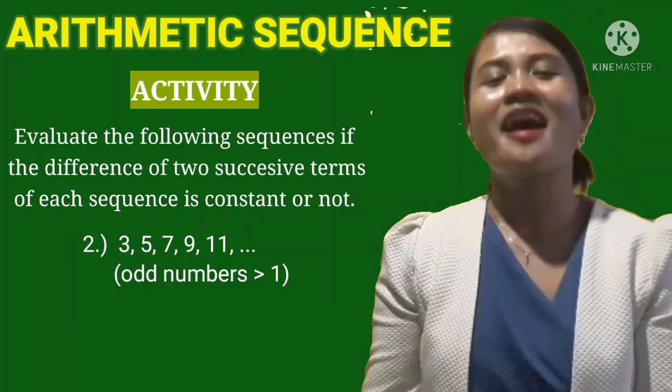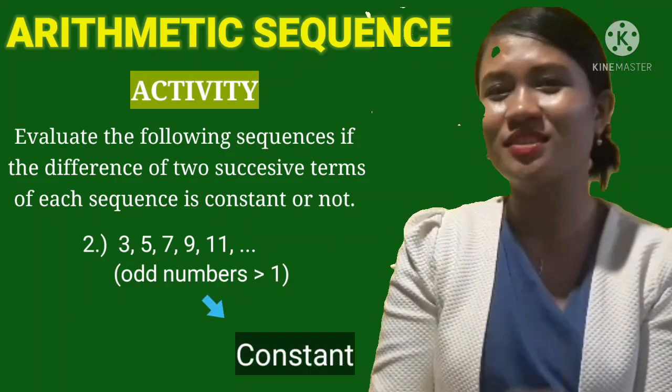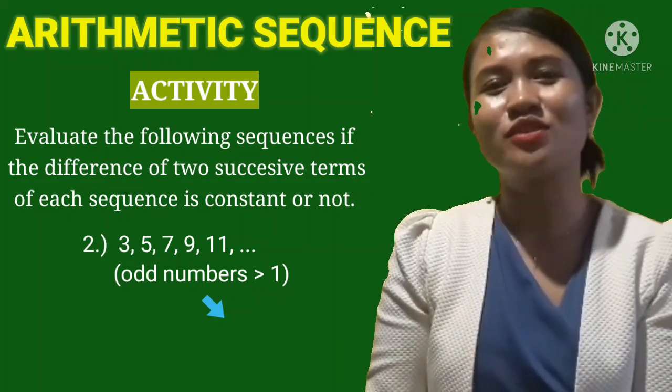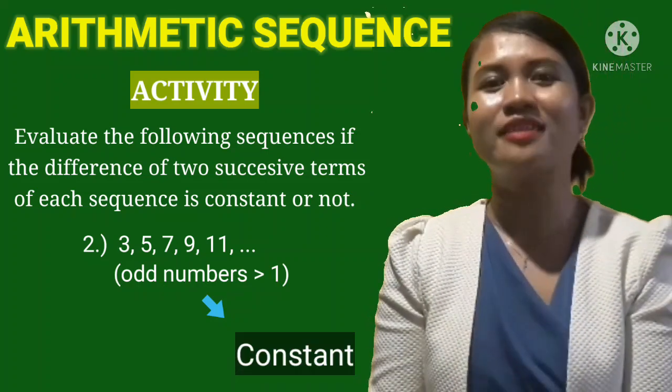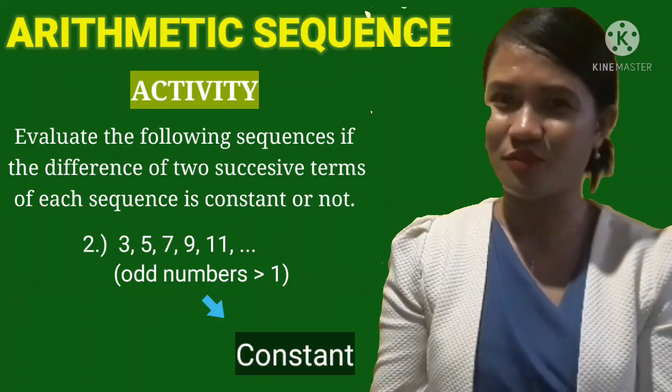So what do you think? Again, it is constant because 5 minus 3 is 2, 7 minus 5 is 2, 9 minus 7 is 2, and 11 minus 9 is 2, and so on and so forth.